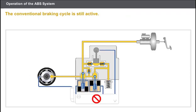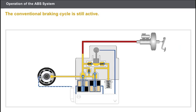When the ABS system ceases to be operational, all the solenoids are deactivated and are automatically reset to the rest position. The conventional braking cycle is still active, and the circuit pressure is directly sent to the brake cylinders.